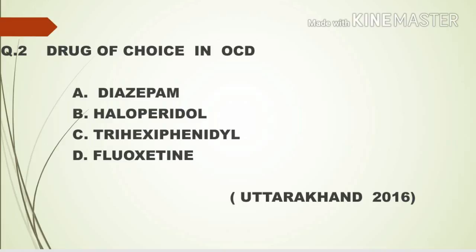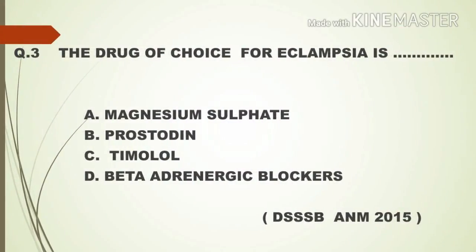Option D, fluoxetine, is the right answer. The next question: the drug of choice for eclampsia is — a) magnesium sulfate, b) prostaglandin, c) timolol, d) beta-adrenergic blockers.